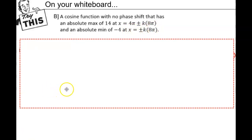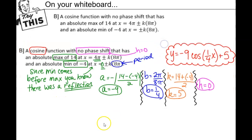Hopefully you tried that problem. We're creating a cosine function. No phase shift tells us h = 0. Since the absolute max is 14 and absolute min is -4, we find |a| = |14 - (-4)|/2 = 18/2 = 9.